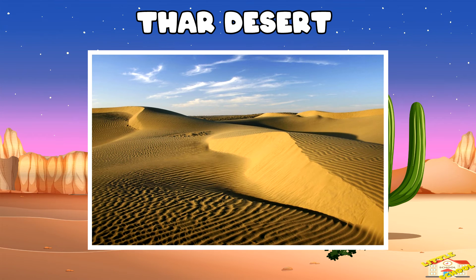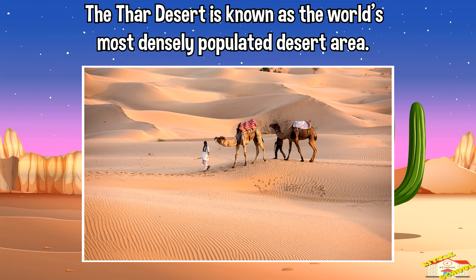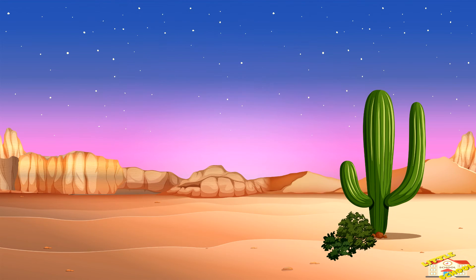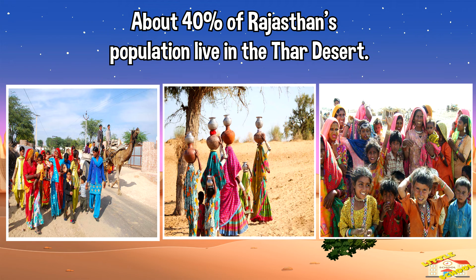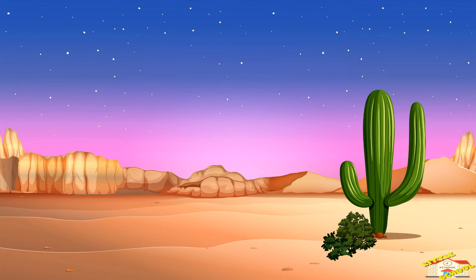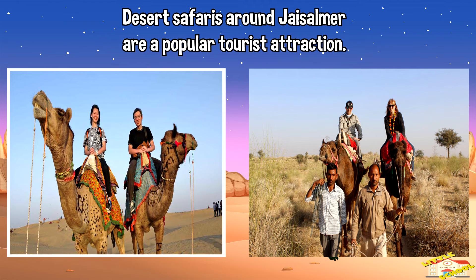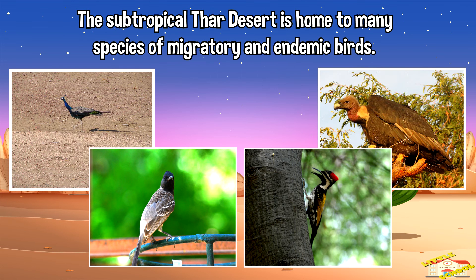And finally, the Thar Desert. The Thar Desert is known as the world's most densely populated desert area. About 40 percent of Rajasthan's population live in the Thar Desert. Desert safaris around Jaisalmer are a popular tourist attraction. The subtropical Thar Desert is home to many species of migratory and endemic birds.